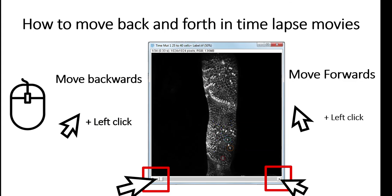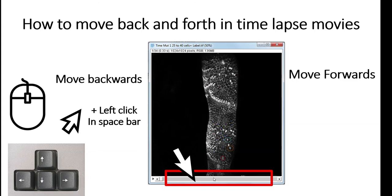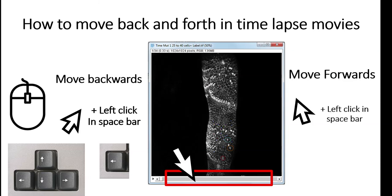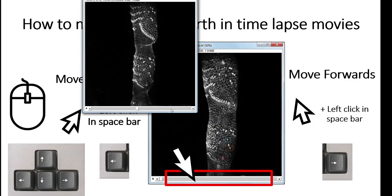Another option is to use your keyboard arrows. You just left click in the spacebar section, then if you left click here and move backwards by clicking the arrow to the left, or move forward by clicking the arrow to the right. Let me show you — I can left click here and move in either direction.